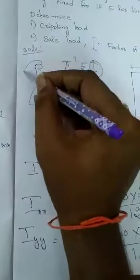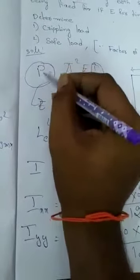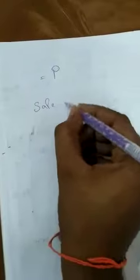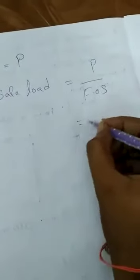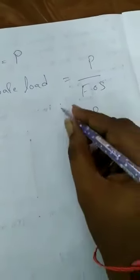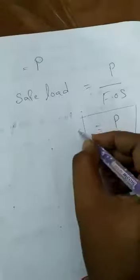With E, LE, and I known, we can calculate the crippling load P. The problem also asks for the safe load with a factor of safety of 3. Safe load = crippling load P / factor of safety = P/3. In this way we calculate the safe load. I hope all of you understood. Thank you.